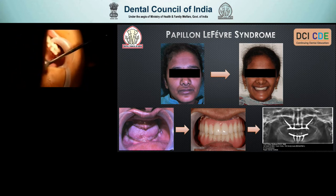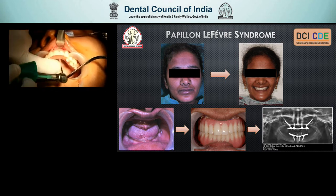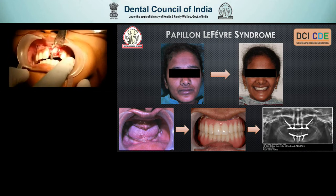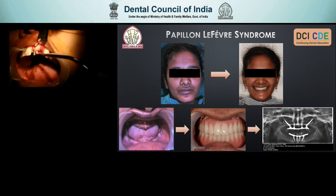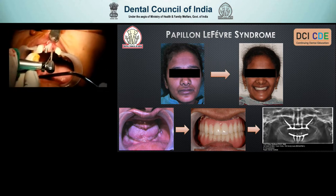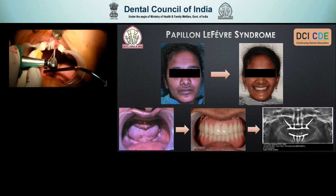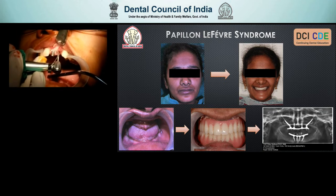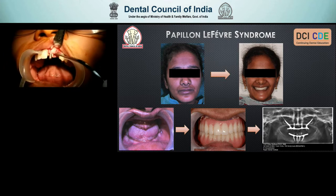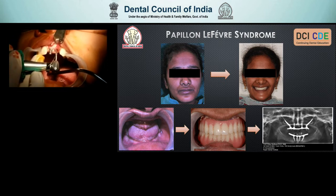Here we are using a surgical stent, which is tooth-based, and then using it to start the first part of the implant placement. Once you remove the stent, you can see that we are placing the first implant, then using a direction indicator in place, and then placing the next implant. With digital planning, which I will allude to later, you can see how this can become much more precise, much more predictable and much safer from the patient's point of view.